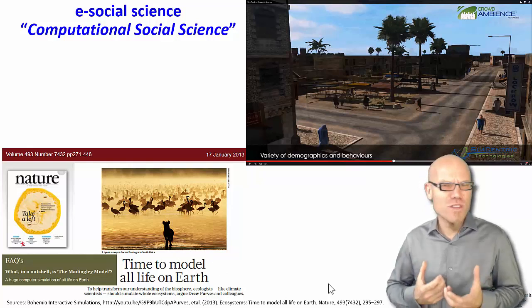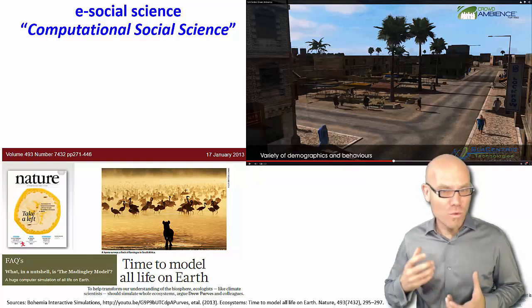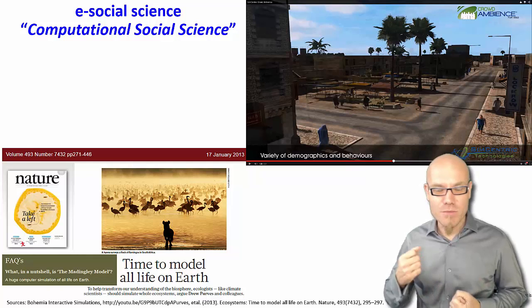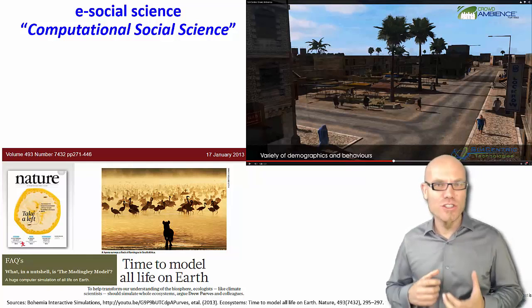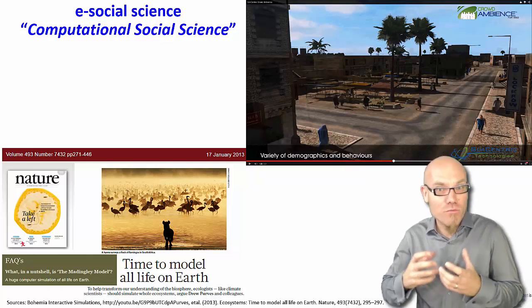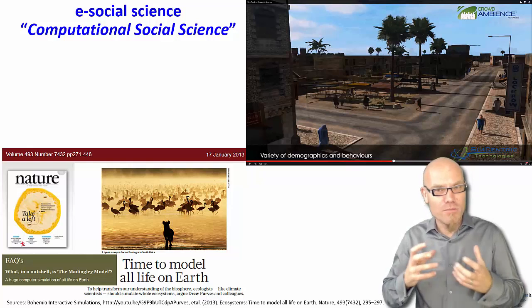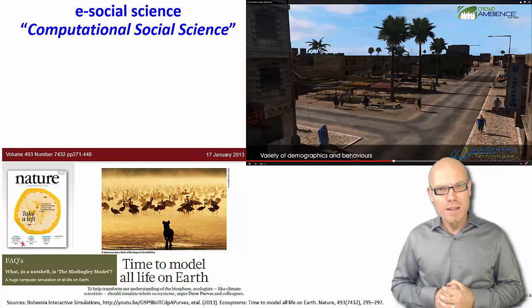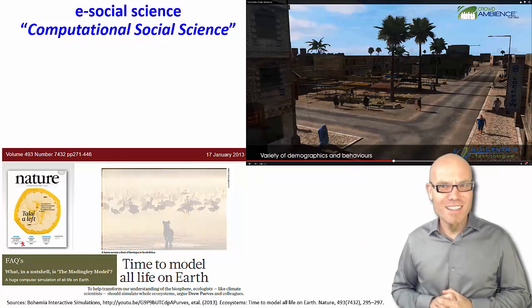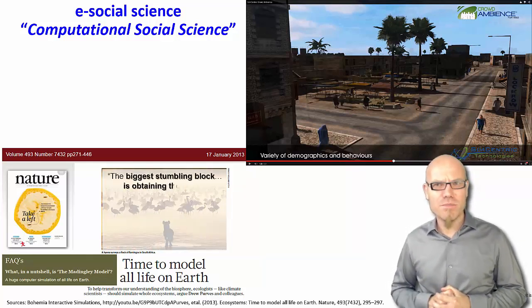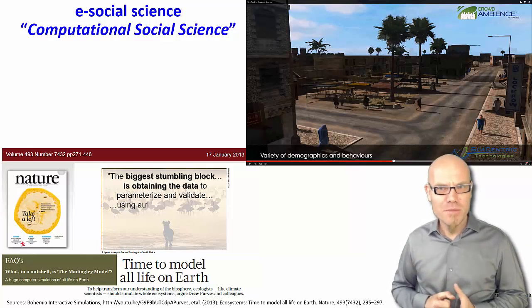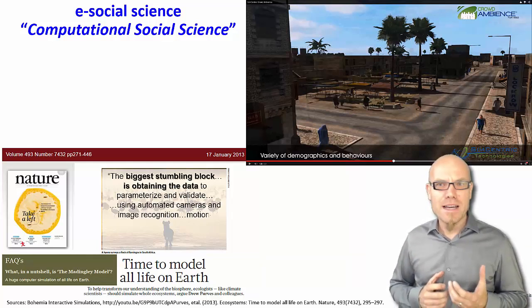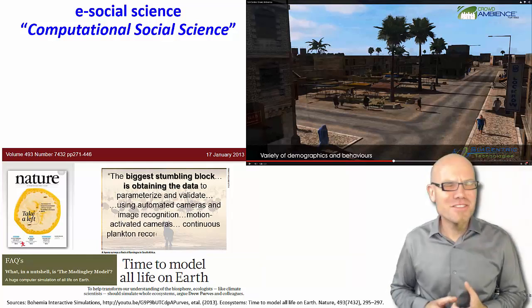If you're an ecologist, it's extremely interesting to know what happens with all the different species—the birds in the sky, the fish in the ocean, all the mammals, how they move—and to model it all together to get a complete picture of the ecological ecosystem or life on Earth. As they showed in this study, the biggest stumbling block is obtaining the data to parameterize and validate the model.